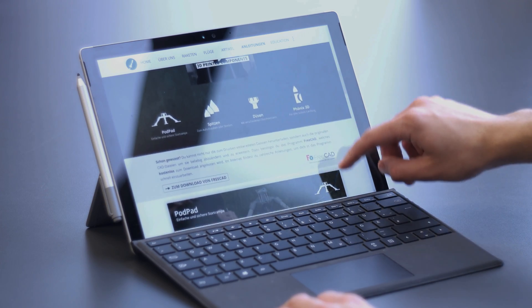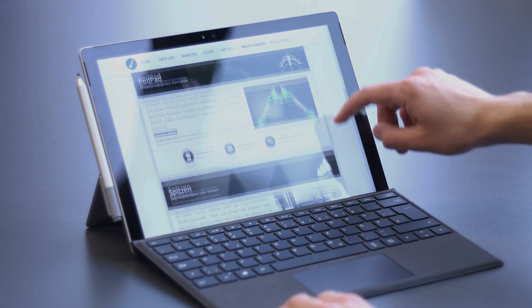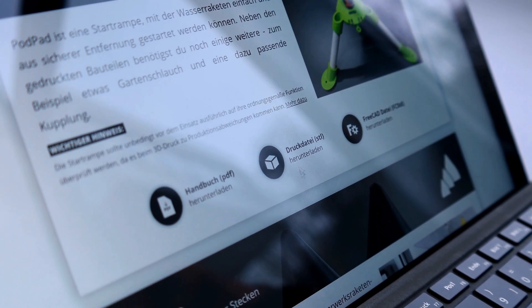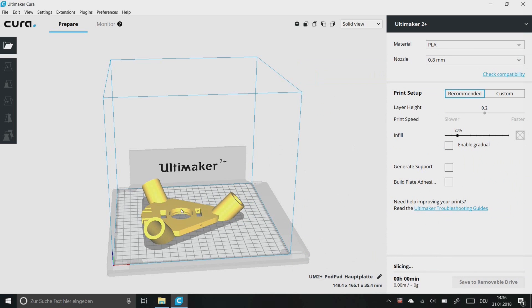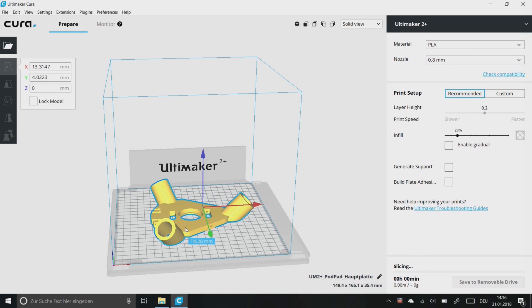To print the components, you have to download the STL files from our website as well. These files are ready for printing once you have put them into a 3D slicing software.